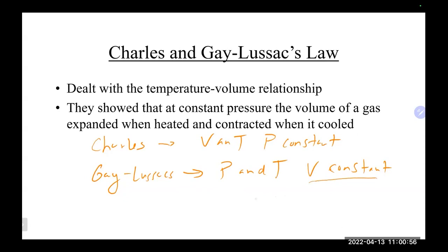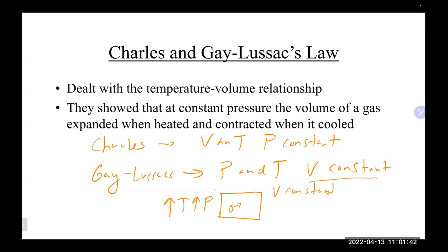Starting with constant volume — Gay-Lussac's — if the container can't change and we increase the temperature, the gas molecules move faster, causing more collisions. Since the volume is constant and can't expand, the increased collisions result in an increase in pressure. Conversely, decreasing temperature makes molecules move slower, causing fewer collisions, and the pressure goes down.